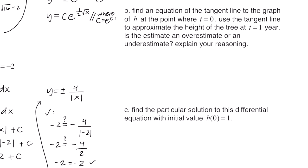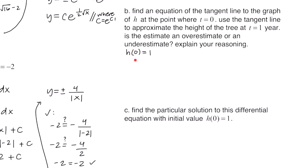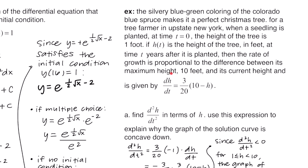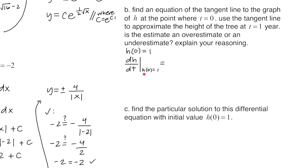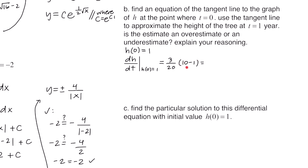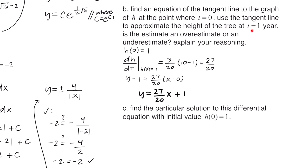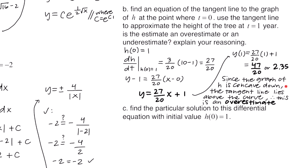Part b asks for the equation of the tangent line at t = 0 and uses it to approximate the height at t = 1. At t = 0, h = 1, so the point is (0, 1). For the slope, dh/dt = (3/20)(10 − 1) = (3/20)(9) = 27/20. The tangent line equation is h = (27/20)t + 1. At t = 1, h ≈ 27/20 + 20/20 = 47/20 = 2.35. Since the graph is concave down, the tangent line lies above the curve, so 2.35 is an overestimate.